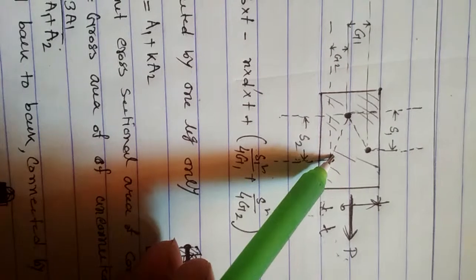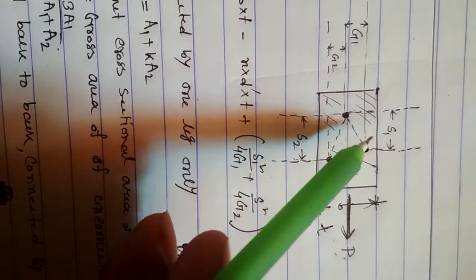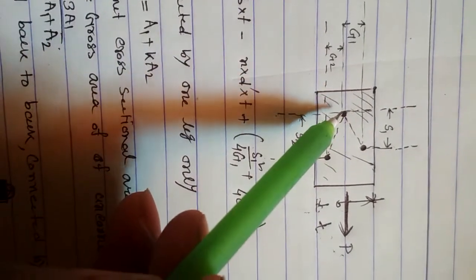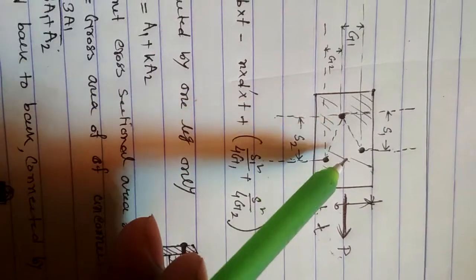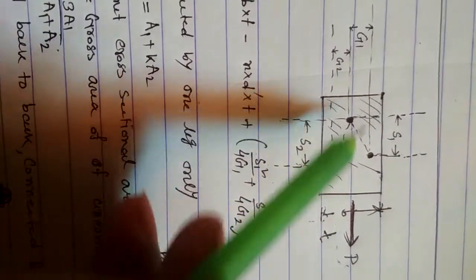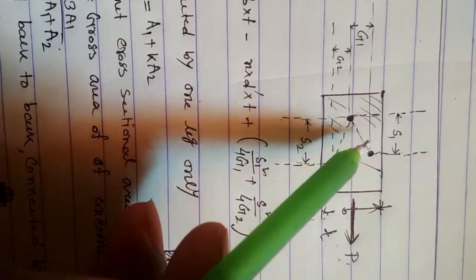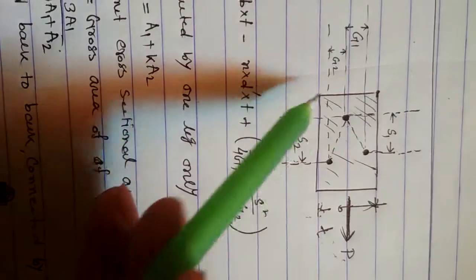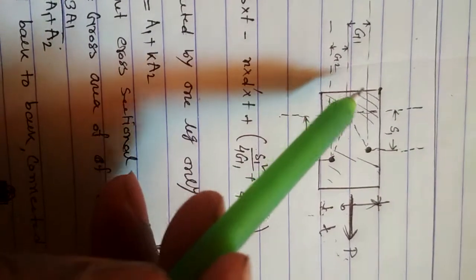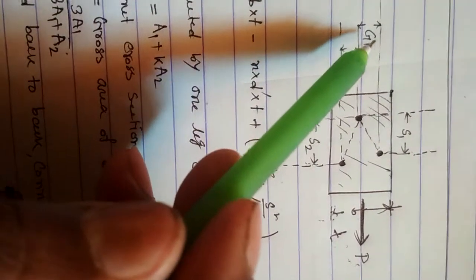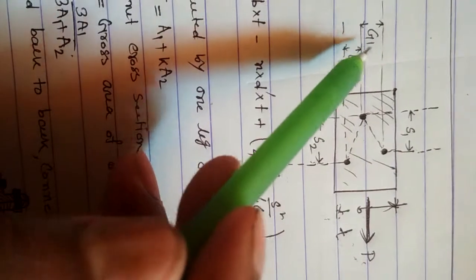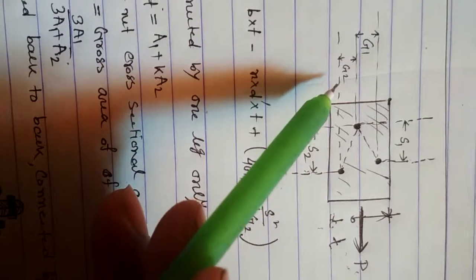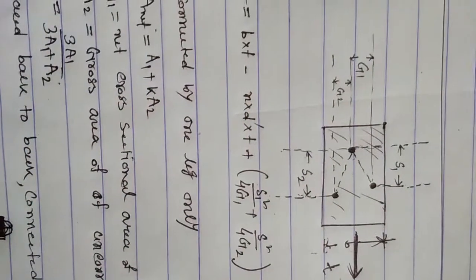The distance between the two bolts in the direction of the force is s1 in case of this bolt and s2 in case of this bolt. The perpendicular distance is denoted by g1 and in case of this bolt it is g2.